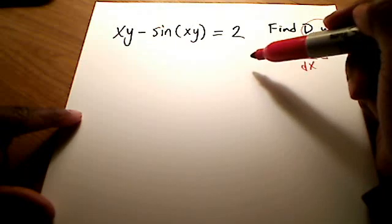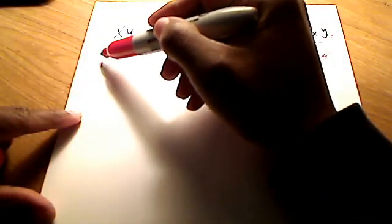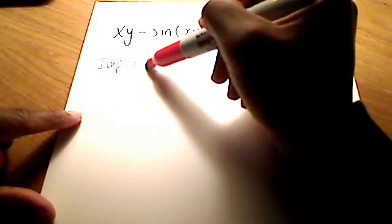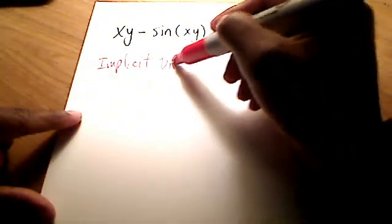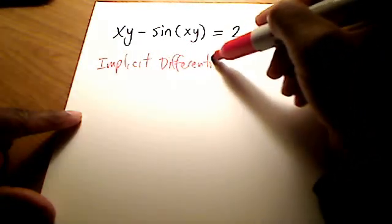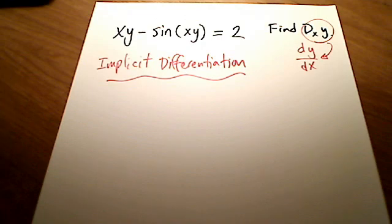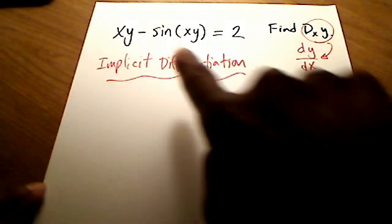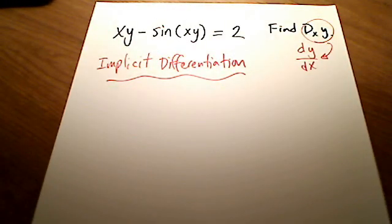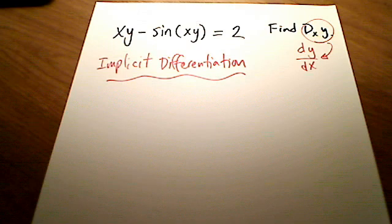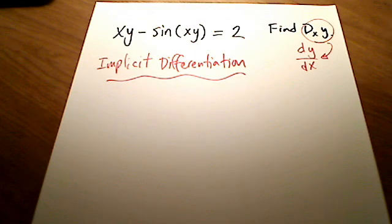We're going to find the derivative of this equation using something called implicit differentiation. It's a trick of calculus we can use on non-functions, like this one right here. To use implicit differentiation, we need to know things like the product rule and the chain rule — just about every rule, maybe even the quotient rule. Implicit differentiation relies on prior rules you've already learned.